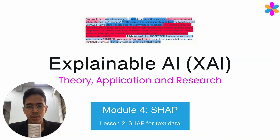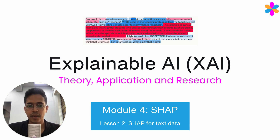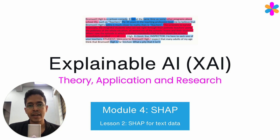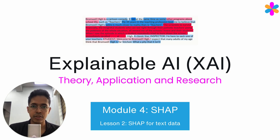Welcome back to our course on explainable AI theory, application, and research. In this lecture, we will see how we can implement SHAP for text-based data — specifically how we can identify those portions within the text that contributed to making a paragraph or sentence classified as negative or positive. We will see which words are contributing positively and which are contributing negatively towards the prediction.